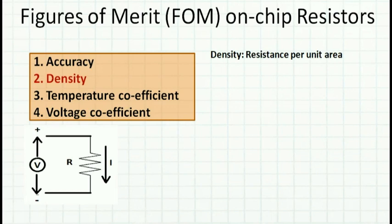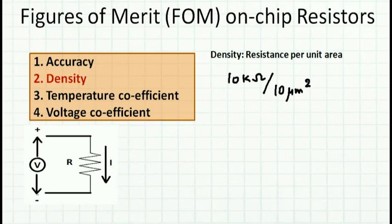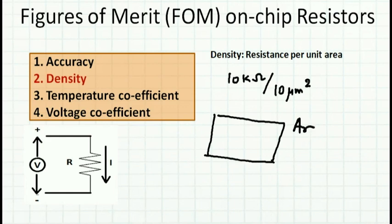The next figure of merit is density — resistance per unit area. For example, 10 kilo ohms in 10 square micrometers. Why is this important? If I have very poor density, building a 10 kilo ohm resistor requires a large area. In semiconductors, area equals cost, so the cost of the IC goes up as area increases.